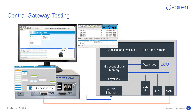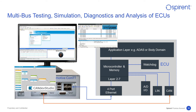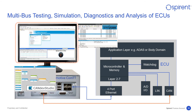There are two scenarios that can be executed. The first one is gateway testing to check different Ethernet and CAN traffic interactions. The other one is ECU simulation, diagnostics, and analysis, whereby CAN Dev Studio and SPIRINT Test Center can be used to simulate other components that are part of the in-vehicle network.